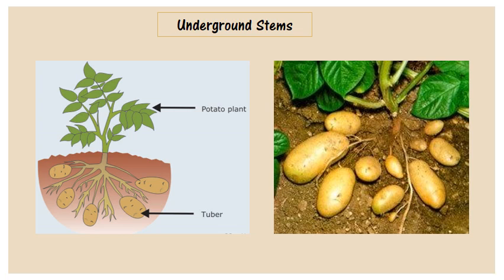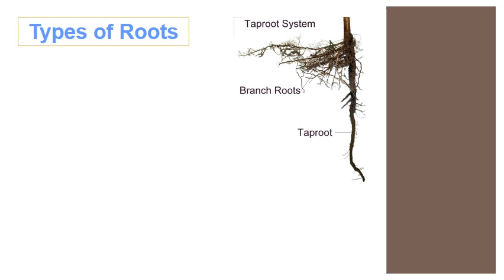Moving to the types of roots — how many types of roots do we have? Nabeel, can you mention them please? Tap root, fibrous root, storage root, and prop root. Excellent! We have four types of roots: tap root, fibrous root, storage root, and prop root.